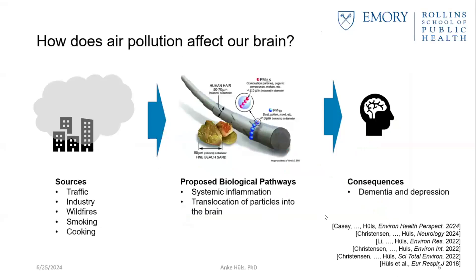The question is: how does air pollution affect our brain? Due to its small size, PM2.5 can actually enter our brain and has been linked to depression, dementia, and Alzheimer's disease. One of the very first studies that looked into the effects of air pollution on dementia was conducted in Mexico City, where they conducted an autopsy of dogs living in the streets. They were able to find air pollution particles in the brains of those dogs — and Mexico City is a highly polluted city.